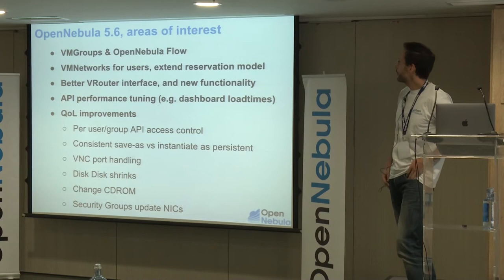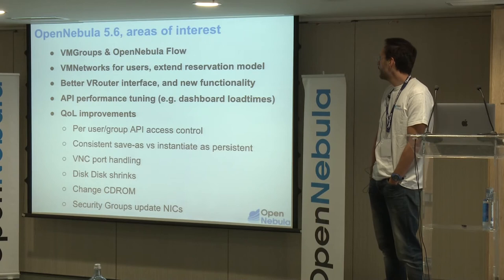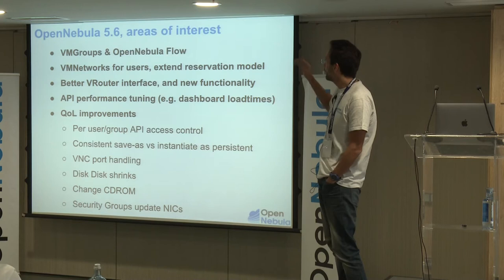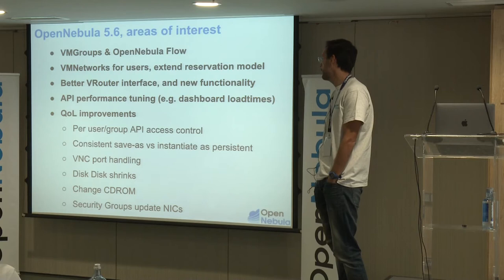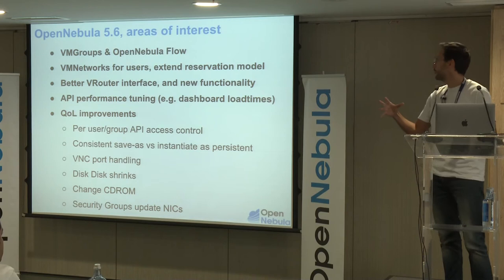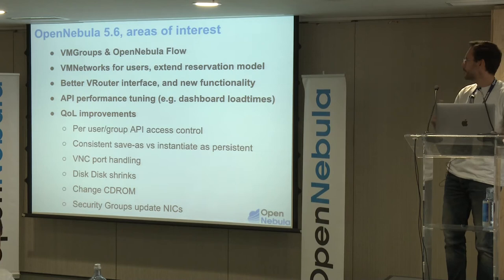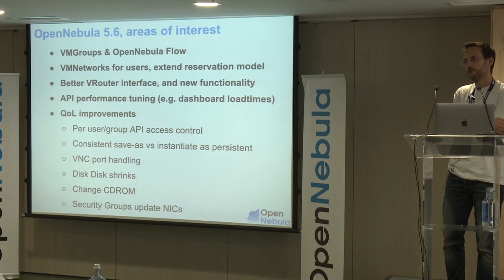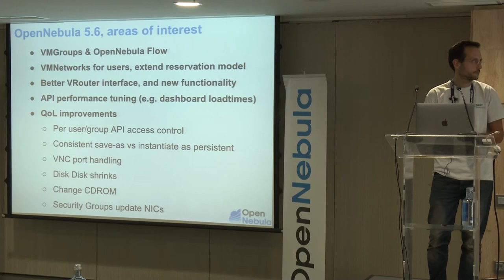For 5.6, we don't really want to make major changes in OpenNebula, but rather improve the quality of life. Right now we have VM groups. We want to work on merging the network flow with VM groups, and the ability for users to create VM networks. We want to extend the reservation of address ranges and make it easier with a better built-in interface. These are our main ideas for 5.6 — many more things to improve the quality of life of cloud administrators.